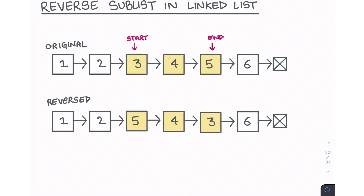This problem tells you that you're given a linked list and you need to reverse a portion of that linked list — you need to reverse a sublist in that given linked list.